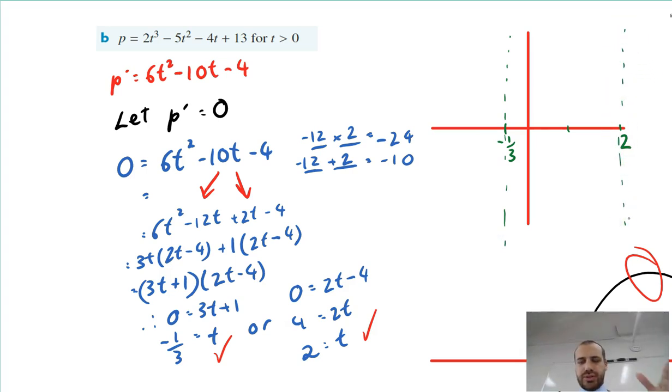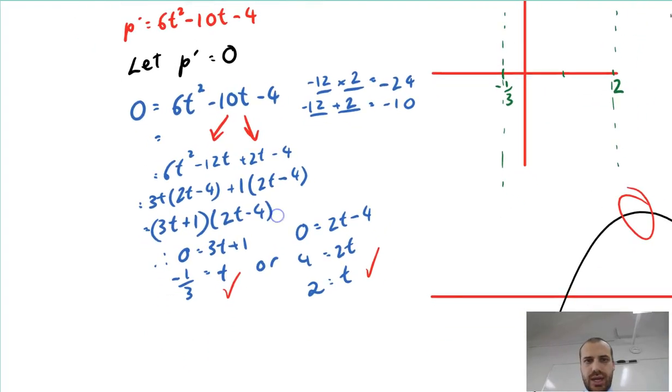So the roller coaster has a turning point at negative one third and two, but I don't know where. I don't know how high or how low the roller coaster would be. So I'm going to have to take negative one third and I'm going to have to take two and substitute them back into our original equation if I'm going to be able to figure out where those stationary points are. So let's do that now.